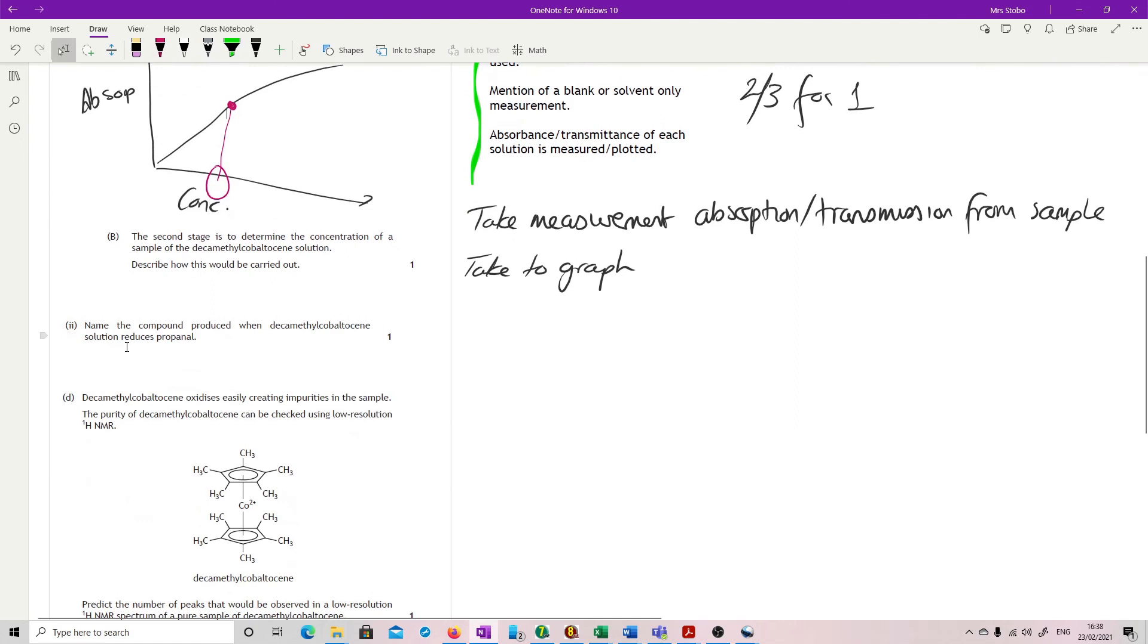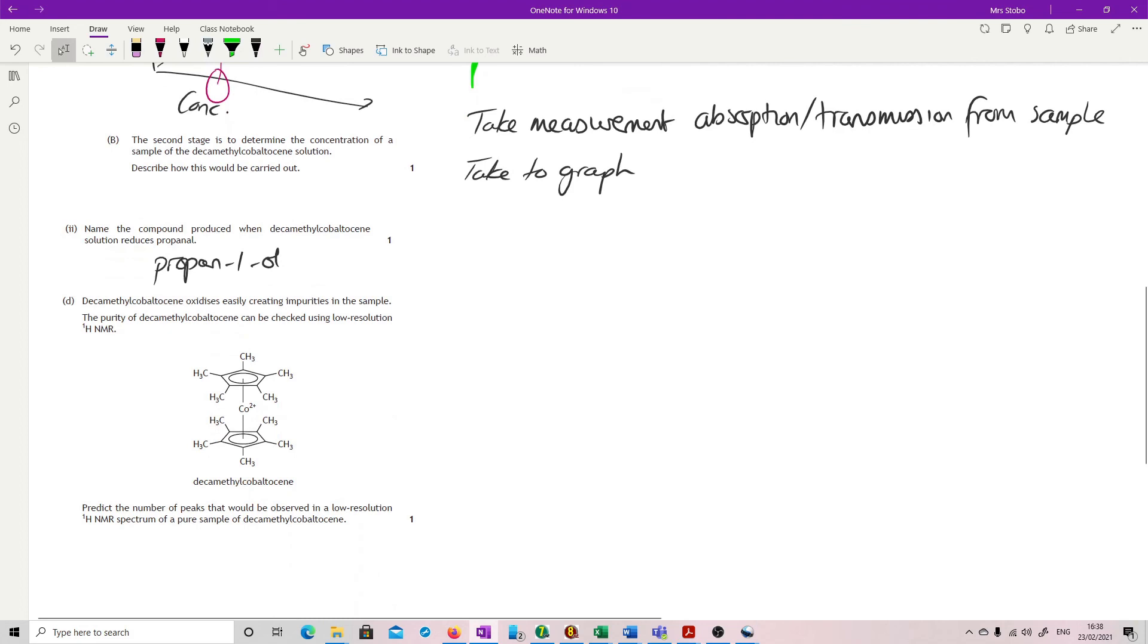Name the compound produced when that big word reduces propanol. Propanol, okay, so propanol is reduced to propan-1-ol. It's actually a higher question. We've then got an oxidation of this easily creates impurities in the sample. The purity can be checked using low-res NMR. Predict the number of peaks that were observed in low-res NMR.